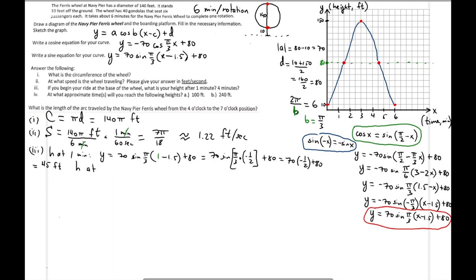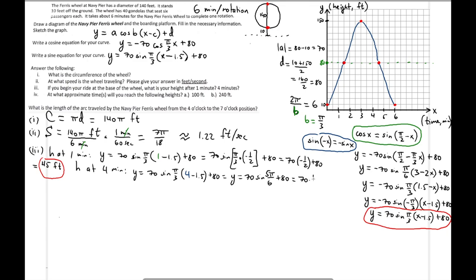Now let's find the height at 4 minutes. Plugging in x = 4: y = 70·sin(π/3 · (4 − 1.5)) + 80 = 70·sin(π/3 · 2.5) + 80. That's 70·sin(5π/6) + 80. Sine of 5π/6 is 1/2. So: 70 × (1/2) + 80 = 35 + 80 = 115 feet.